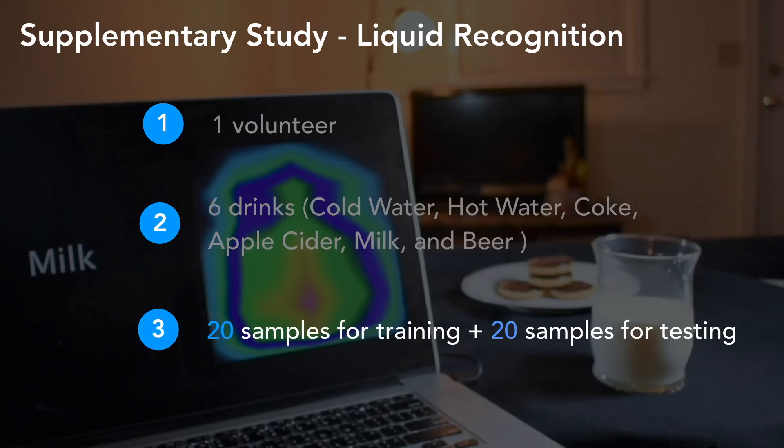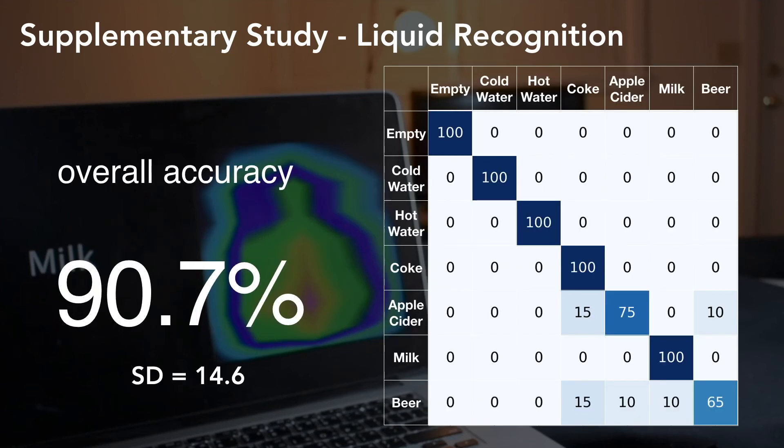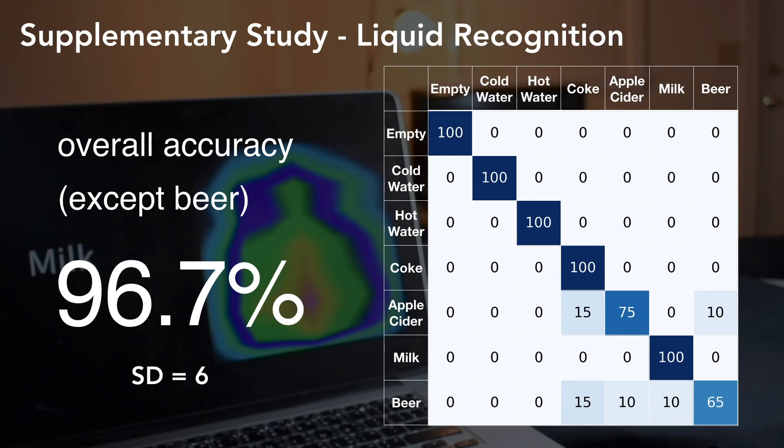Each drink had 20 samples for training and 20 samples for testing. The results show an overall accuracy of 90%. The worst case which was beer, if we remove, resulting in a higher accuracy of up to 96%.